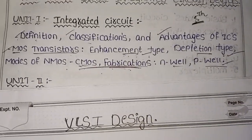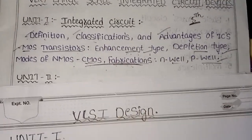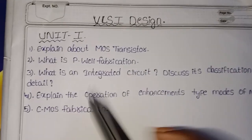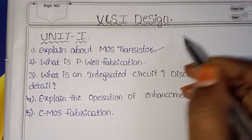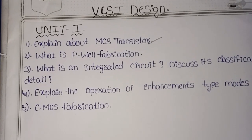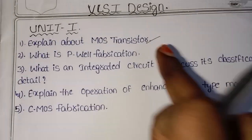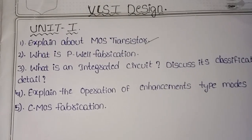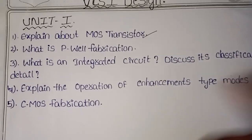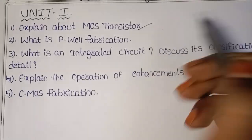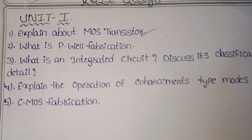In our previous paper, let's look at the exam questions. First, explain about the MOS Transistor. If MOS Transistor appears as a question, it is not just a definition — for example, it has two types. The Depletion Type and Enhancement Type each have a side heading.